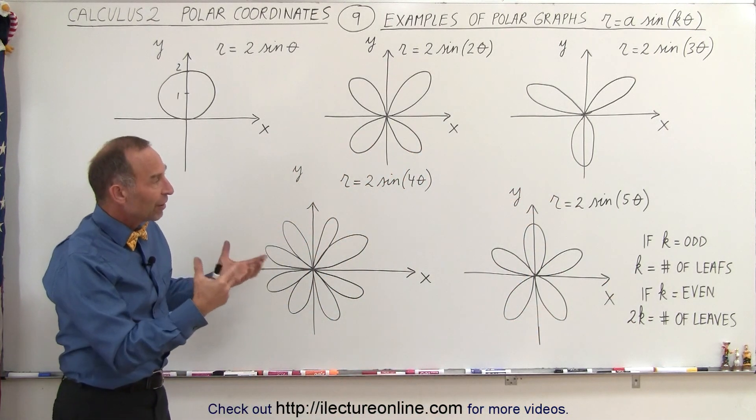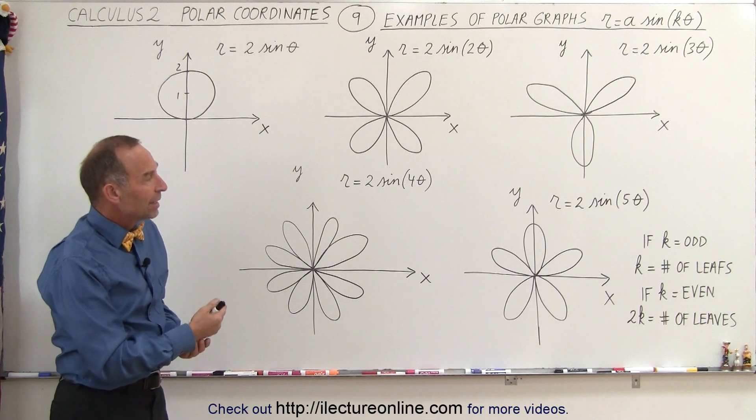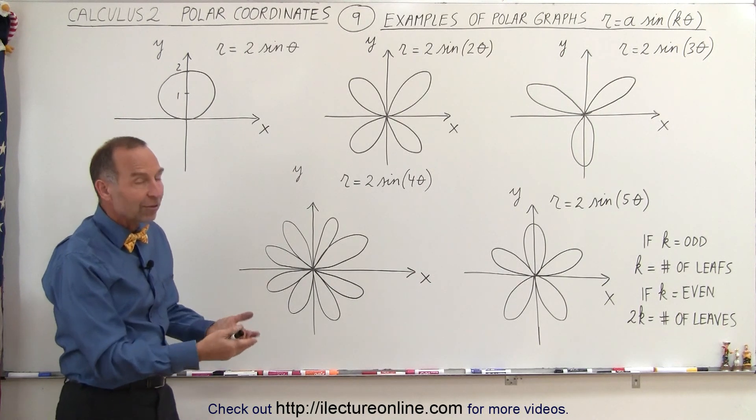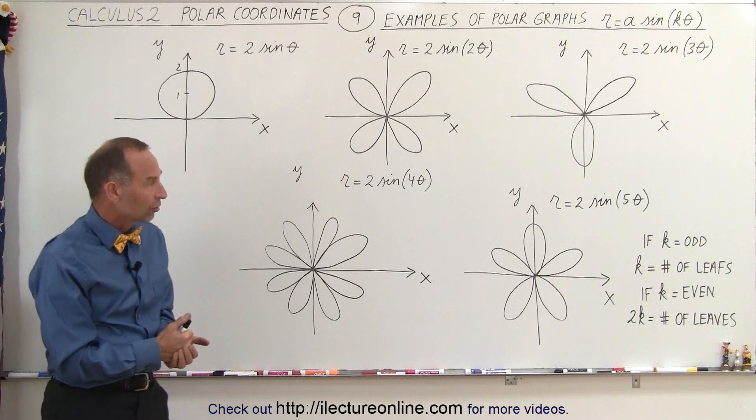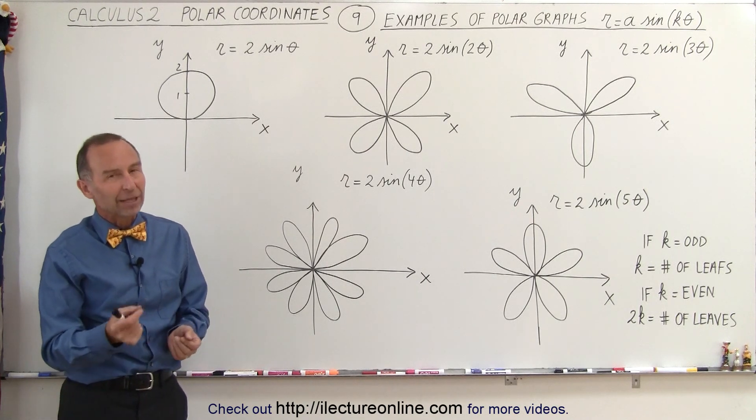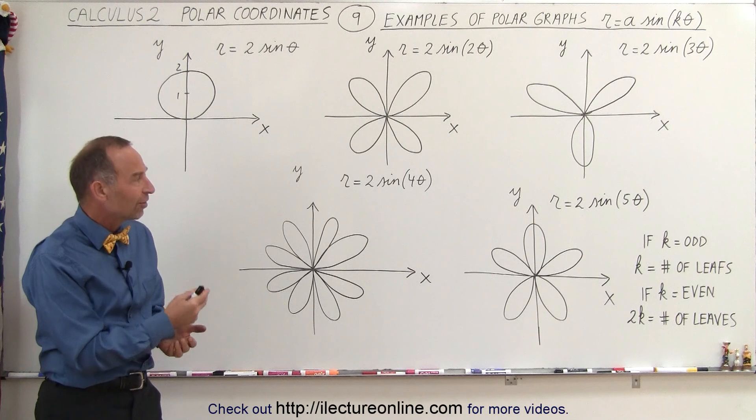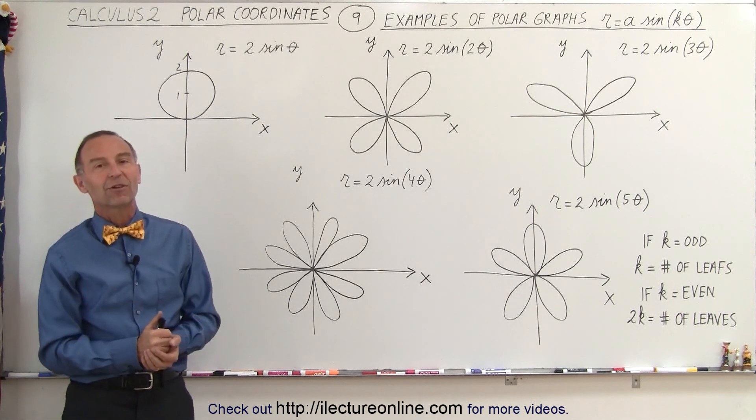So that gives you a fairly good idea what the function r equals some constant times the sine of some constant times theta looks like. In the next video, we'll do the same thing, but then we'll use the cosine instead of sine to see where the differences are.